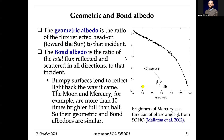We can define a couple different versions of the albedo. The geometric albedo is the ratio of the flux reflected head-on to the incident — if I'm the Sun and I look at the crumpled paper, how much goes back to me? That's the geometric albedo. Compared to the Bond albedo, which is the ratio of the total flux reflected and scattered in all directions. The Bond albedo is the one we think of as the regular albedo. Is the geometric albedo greater or smaller than the Bond albedo? It has to be smaller, because Bond accounts for everything.